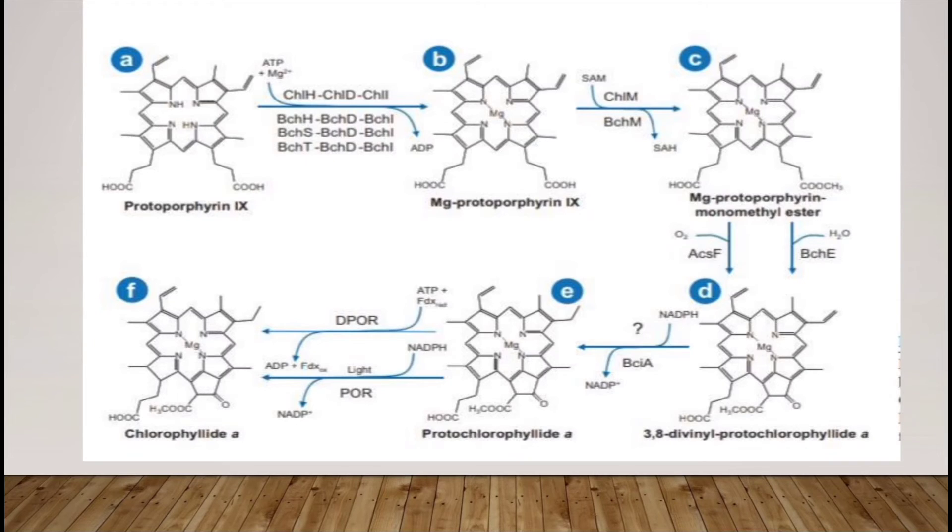Next step, magnesium protoporphyrin monomethyl ester is converted into 3,8-divinyl protochlorophyllide a. That is, magnesium protoporphyrin IX monomethyl ester cyclase enzymes are involved in converting into 3,8-divinyl protochlorophyllide a.